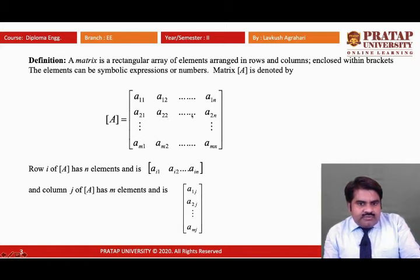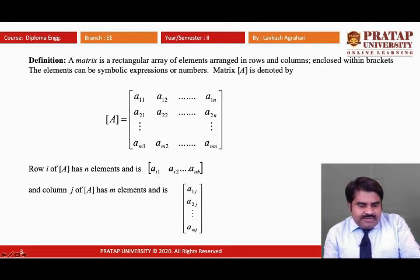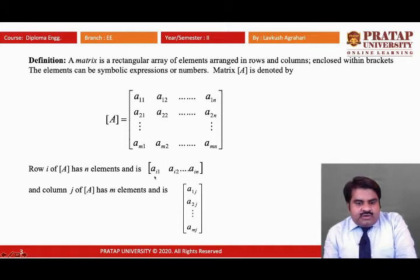The elements A21 up to A2N are the elements of the second row. Likewise, AM1 up to AMN are the elements of the Mth row. So the elements of the ith row are Ai1, Ai2, up to AiN. Similarly, the column J of the matrix having M elements can be written as A1j, A2j, up to AMj. In a row we have N elements and in a column we have M elements.